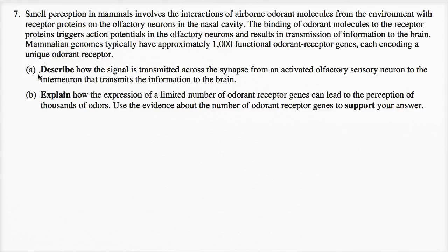Alright, part A. Describe how the signal is transmitted across the synapse from an activated olfactory sensory neuron to the interneuron that transmits the information to the brain. So let's draw this out. This is part A. Let me draw the activated olfactory sensory neuron with its dendrites.